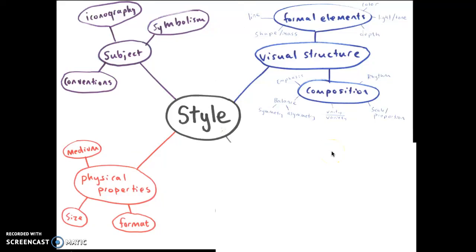Starting again basically where we left off. We're talking about the things that impact the meaning of the artwork or that help us identify the style of the artwork. So here's our mind map. We've talked about subject, physical properties, and visual structure — that includes formal elements and composition.